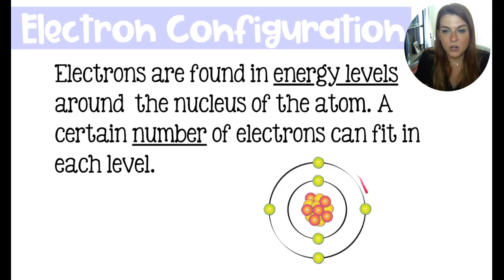So this electron right here is going to prevent this electron from getting any closer to the nucleus because it's blocking. They have a repulsive force between them. The same is true for the electrons in the second energy level. This is why a certain number of electrons can fit in each energy level.